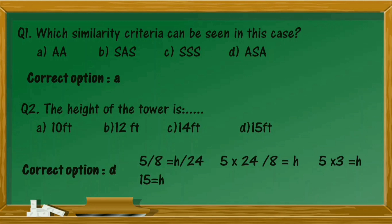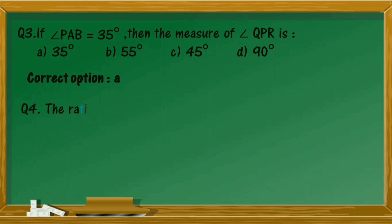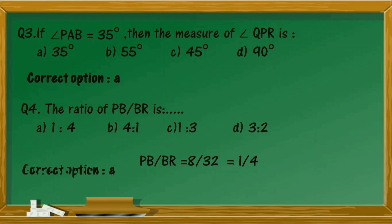Question 3: If angle PAB equals 35°, then what is the measure of angle QPR? Since the two triangles are similar, their corresponding angles are equal, so the correct option is option A — 35°. Question 4: What is the ratio of PB to BR? Substituting the given lengths, PB/BR equals 8/32, which equals 1/4. So, the ratio is 1:4 and the correct option is option A.